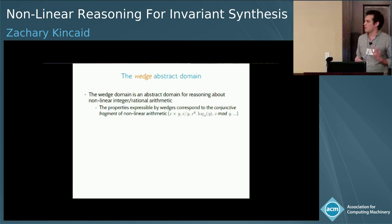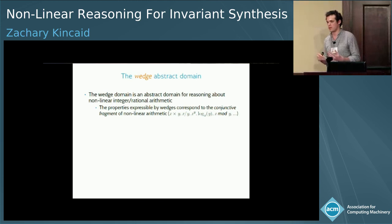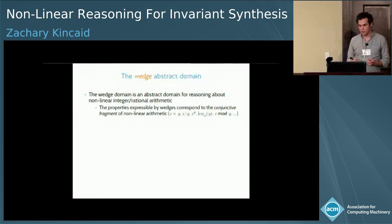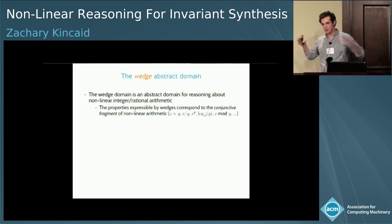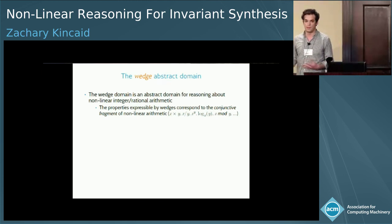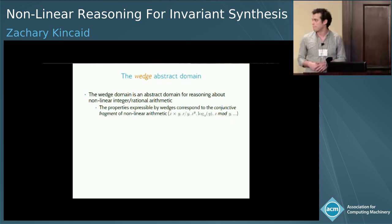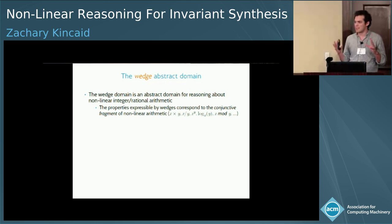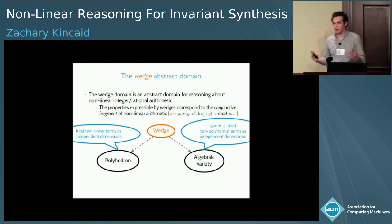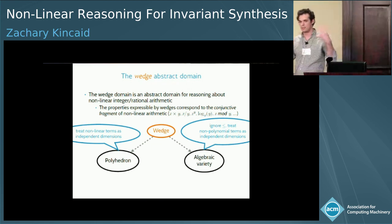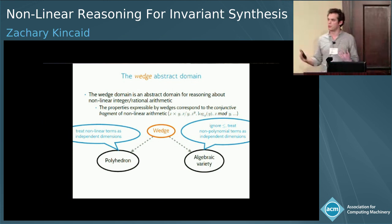The key piece of technology we use to extract recurrences is what we call the abstract domain of wedges. Just as you can think of a polyhedron as corresponding to the conjunctive fragment of linear arithmetic — a conjunction of linear equations and inequations — a wedge is the conjunctive fragment of nonlinear arithmetic. We can have equations and inequations that involve polynomials, exponentials, logarithms, and so on.